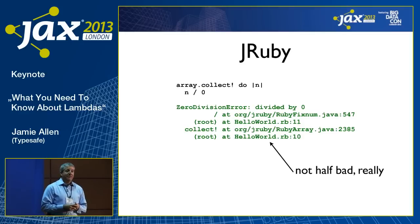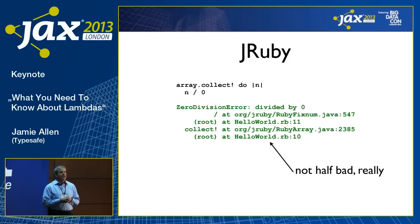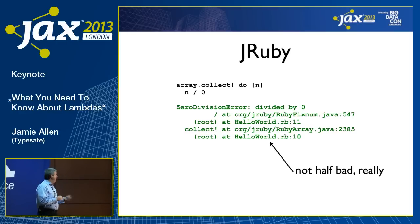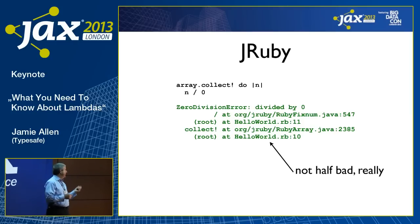JRuby actually did this pretty well. I heard that they had problems with really obfuscated stack traces, and Charles Nutter — who does an amazing job — sat down with other JRuby developers and they found ways to express exceptions pretty nicely.